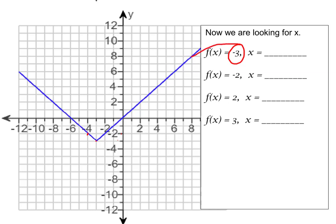We're going to go to negative 3 on the y axis and then over to the graph and then up to the x axis where we find out that x is negative 3. So x is negative 3.